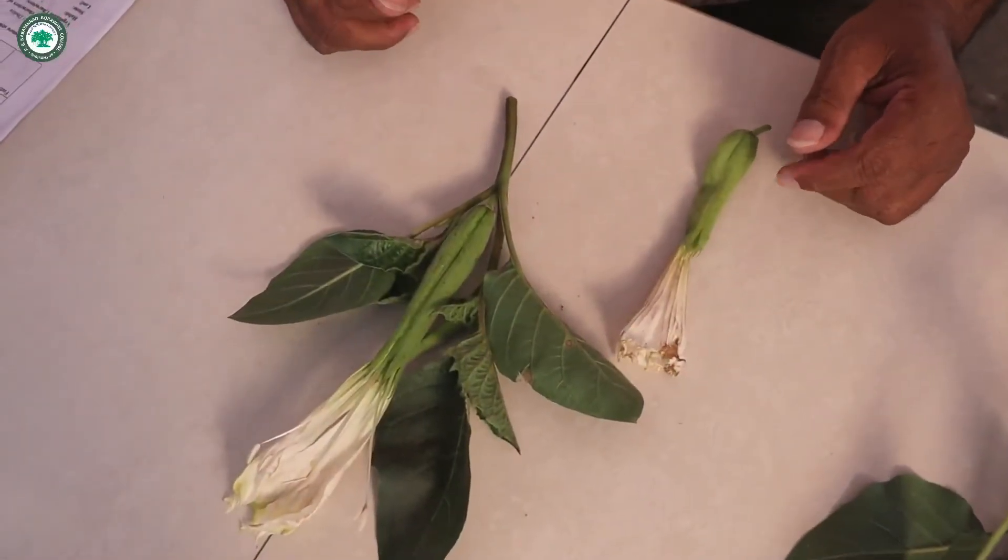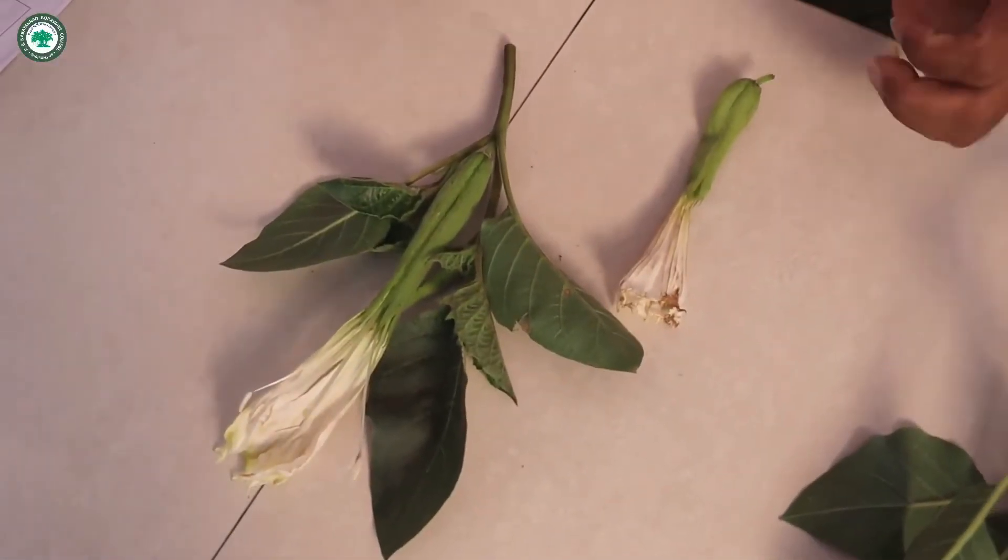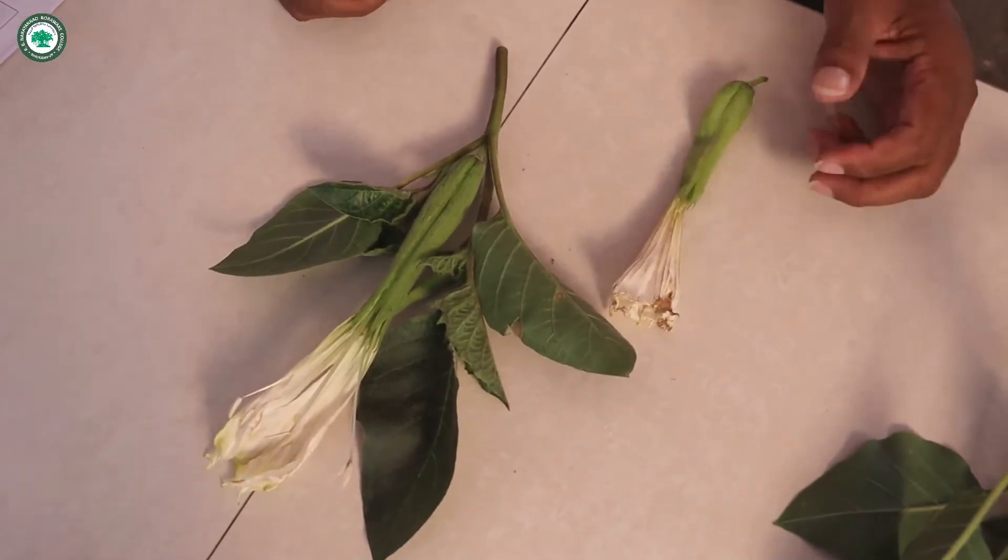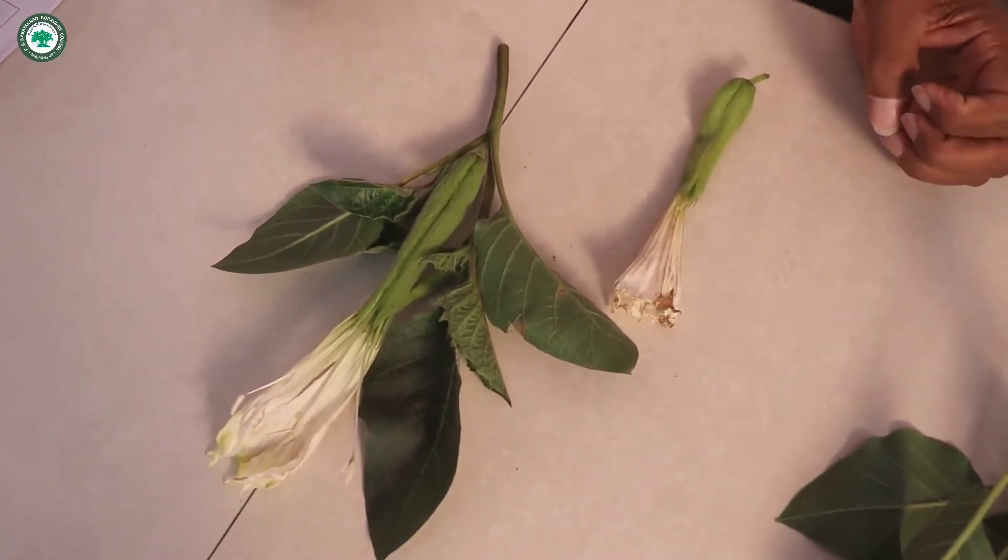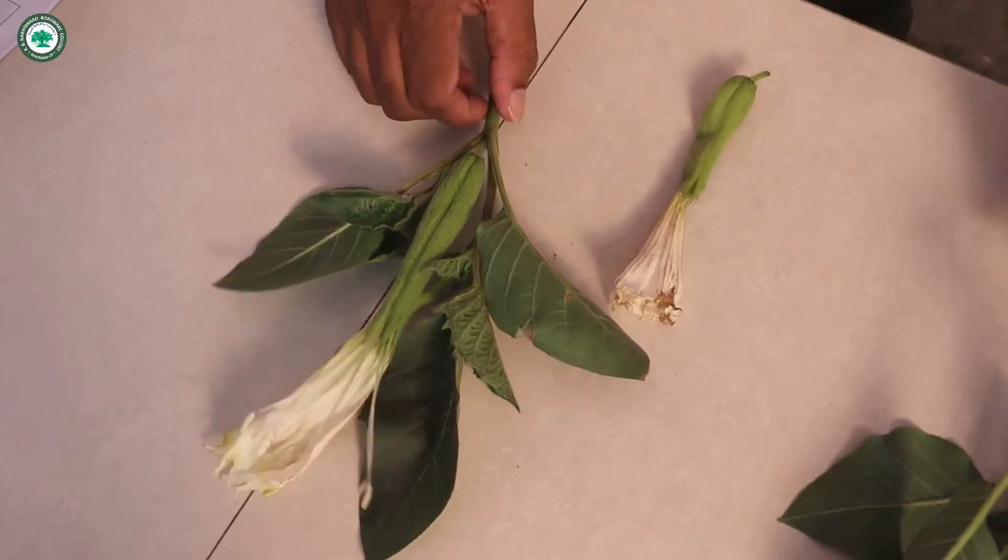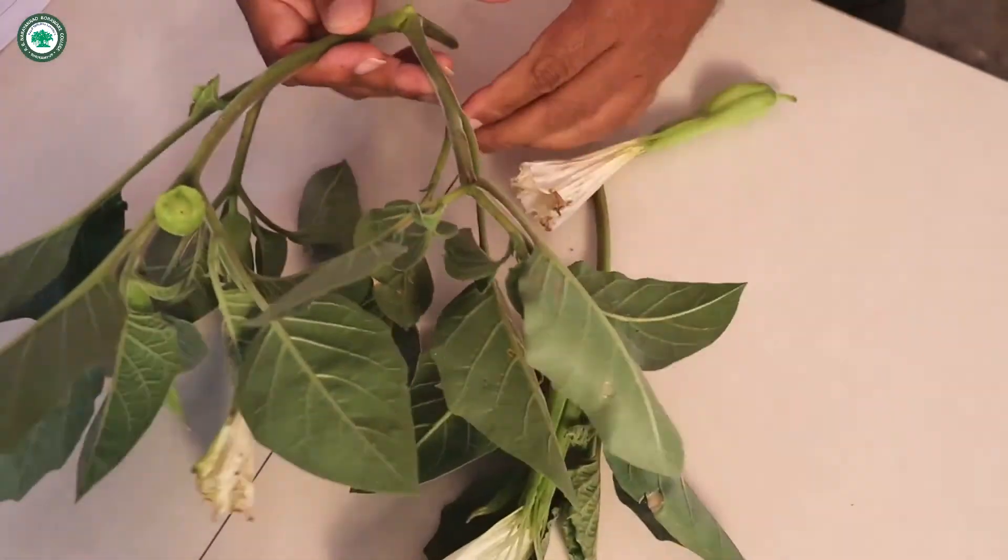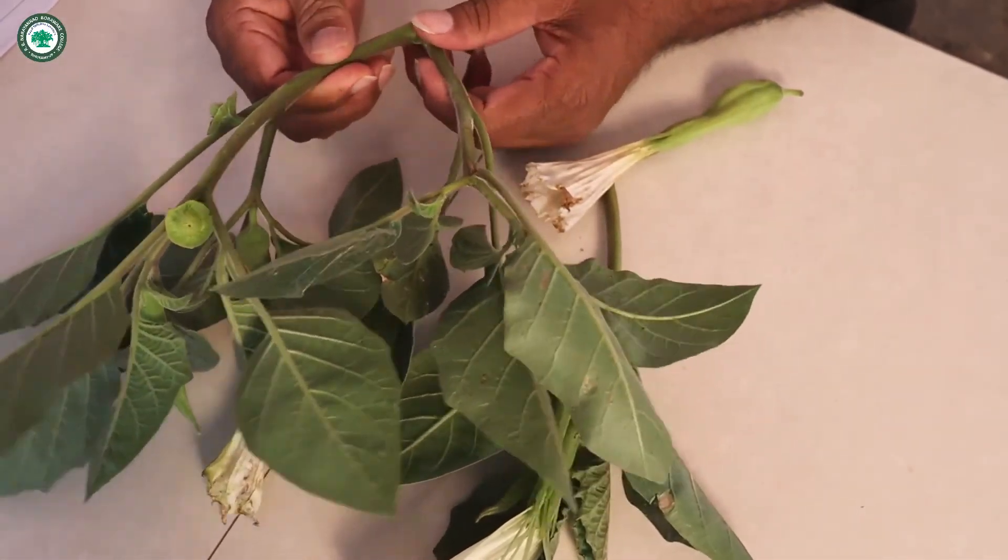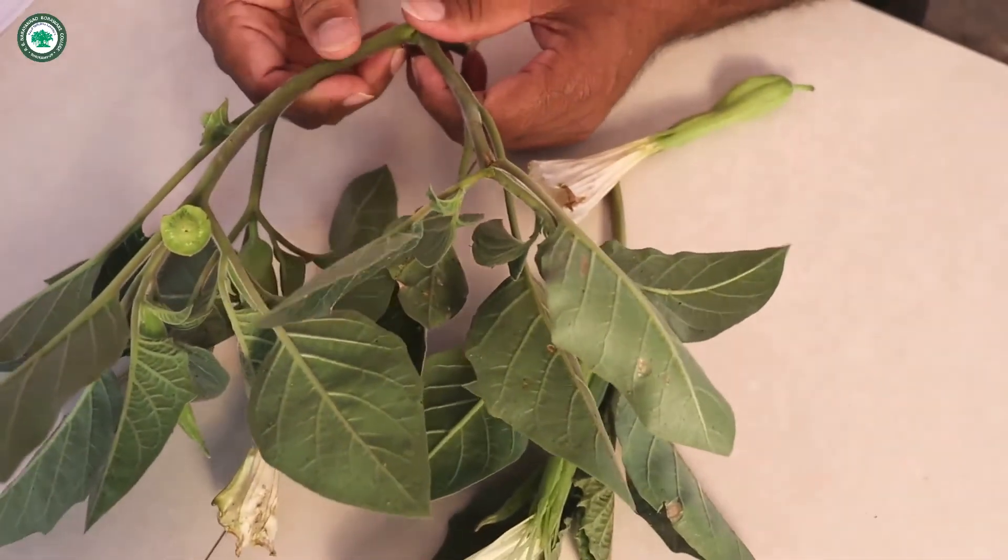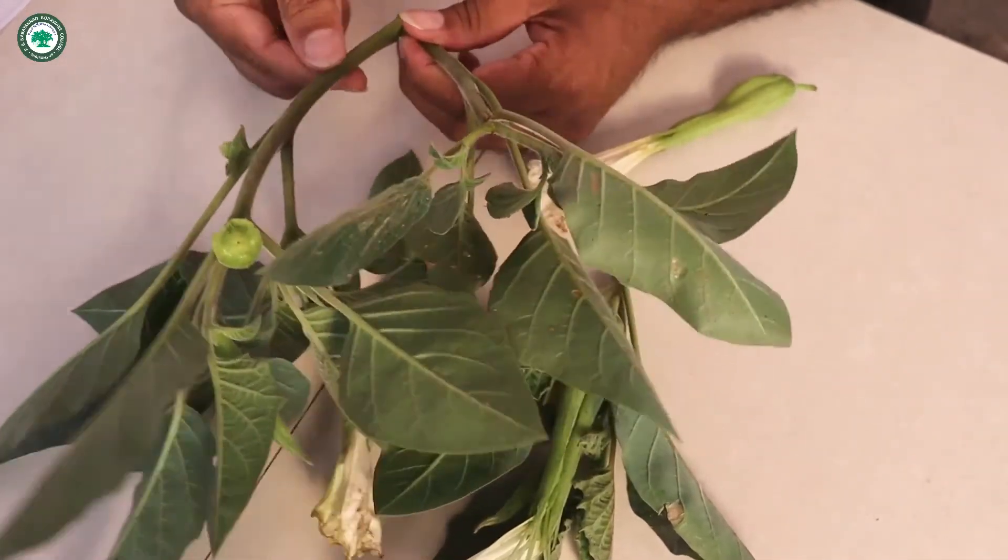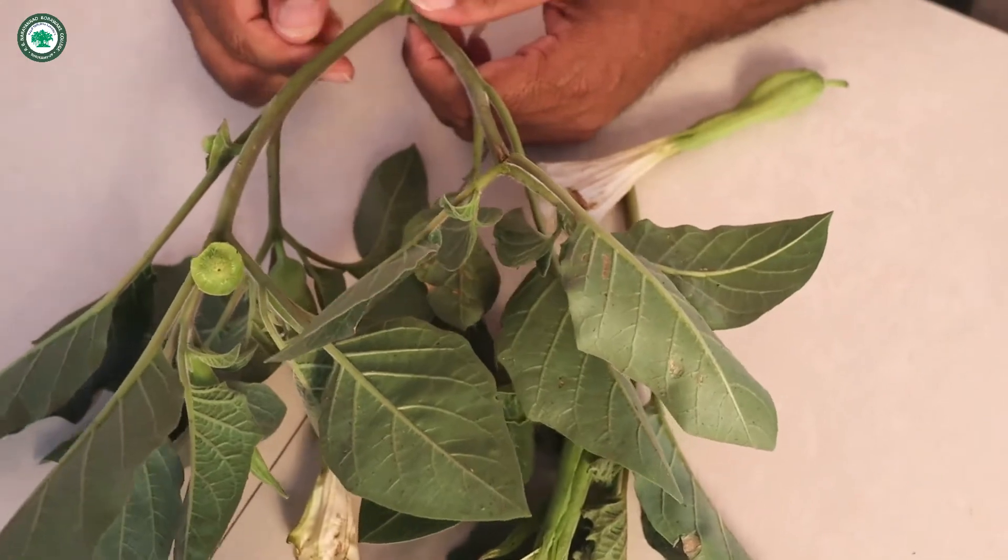We have to observe now the morphological characters. From this first that is the vegetative characters. Habit, it is annual herb. Now the stem, the stem is herbaceous, it is soft, it is aerial, it is erect, that is upright, it is cylindrical, it is branched and pubescent.